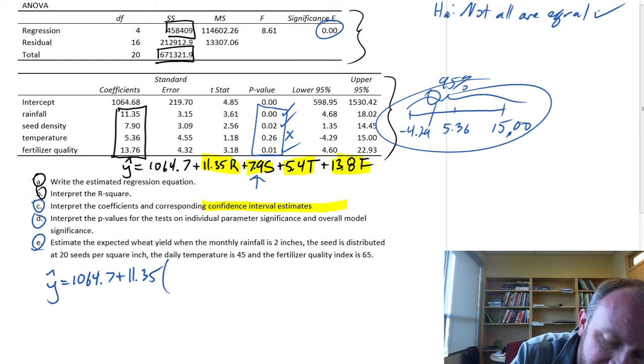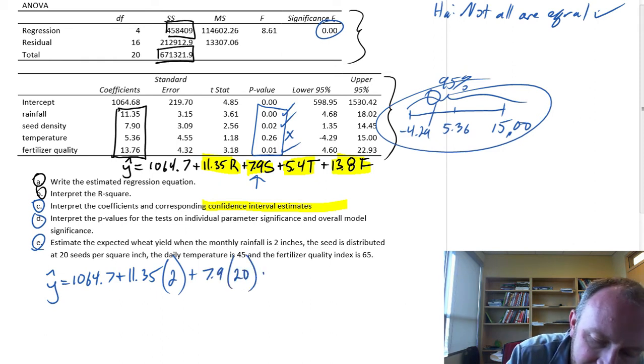Here we have for the rainfall, we have two inches of rain. Seed distribution is 20. This is 7.9 times 20. Plus 5.4. Our average daily temperature is 45. And the fertilizer quality index is 65.